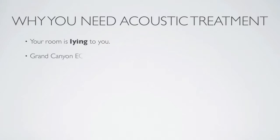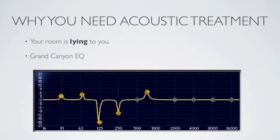Sometimes I call it the Grand Canyon EQ, because it's very possible that the EQ curve your room is introducing into your signal could look something like this. I'm not an acoustician, but I can tell you that in some rooms it's very reasonable to expect that some low frequencies — like at 125 hertz — will get cut severely because of the shape of the room and the way those frequencies interact. It can also cause boosts at different frequencies, so you're basically going to listen to your audio through this sort of an EQ.